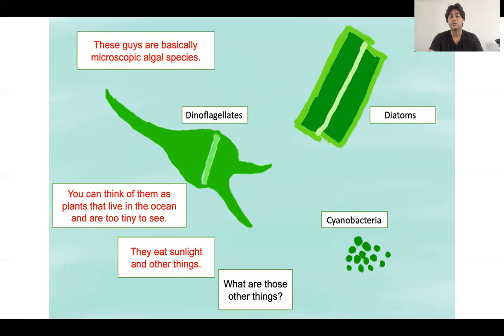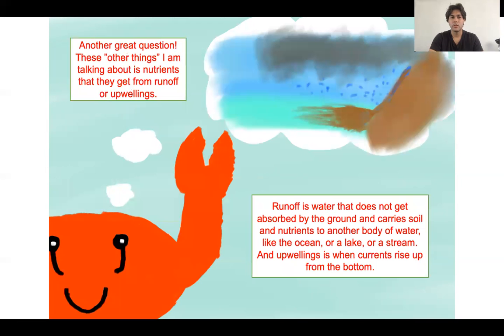Because I can't tell that they photosynthesize, right? And the question goes, what are those other things? Another good question. These other things that I'm talking about are nutrients that they get from runoff or upwellings, or both. Runoff is water that does not get absorbed by the ground and carries soil and nutrients to another body of water like the ocean or a lake or a stream. And upwellings is when currents rise up from the bottom. And the reason why they can get nutrients from upwellings is because upwellings can carry nutrients from the bottom of the ocean to the top where you can find those algal species, those tiny, tiny things.